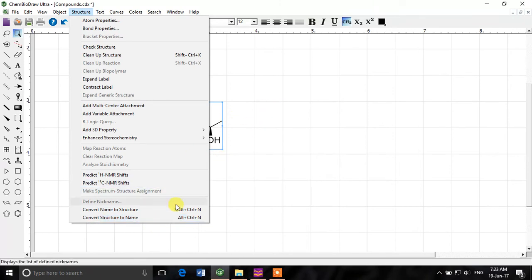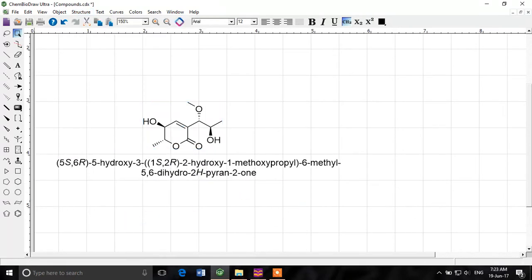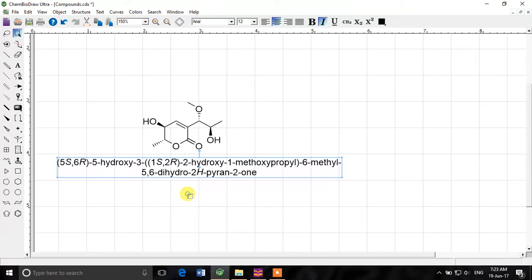First we'll do convert structure to name because we have already selected a structure. If we click convert structure to name, look that's the IUPAC name of this compound which ChemDraw has given us.